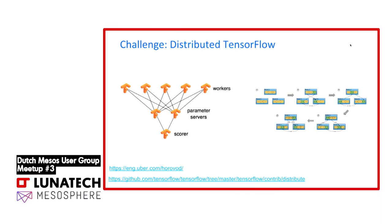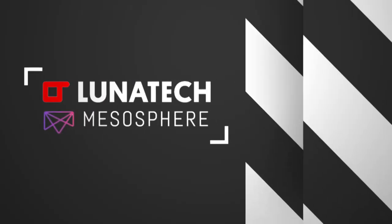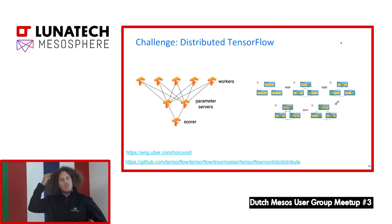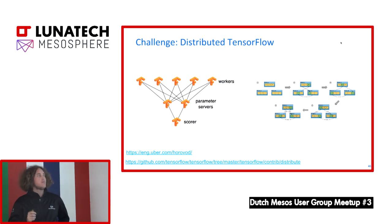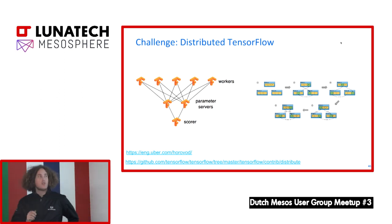This led to something called Horovod, which gets rid of those parameter servers by employing an algorithm called AllReduce. TensorFlow itself in the last two releases has this new concept of distribution strategies, and one of those strategies is basically this AllReduce model where you no longer need parameter servers.